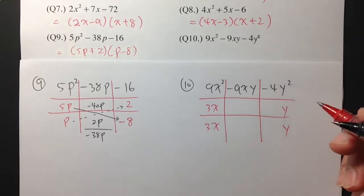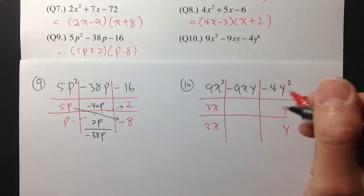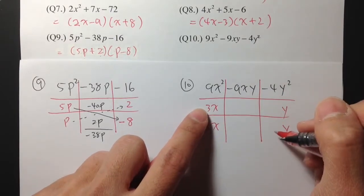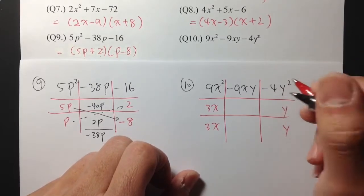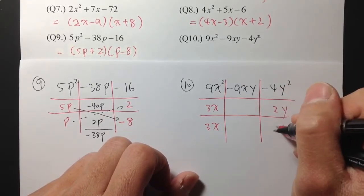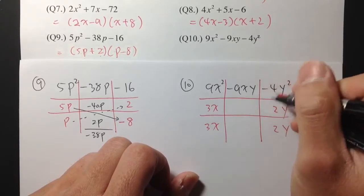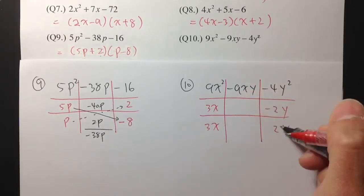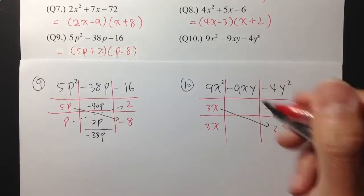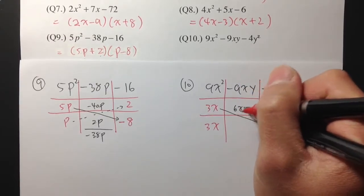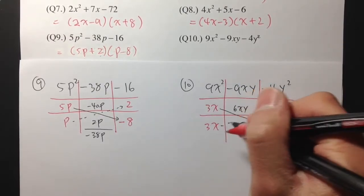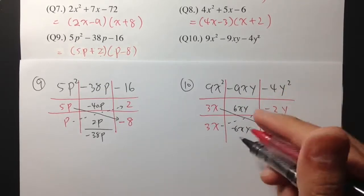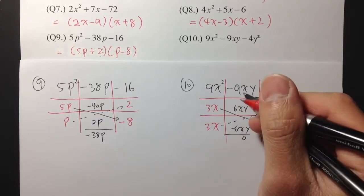Let me just do it to demonstrate. If I put 2y and 2 right here — I need to get a negative. 3x times 2y — these two together is 6xy. But then 3x times negative 2y is negative 6xy. Well, that added to 0. These two added to 0. That's not what we want.